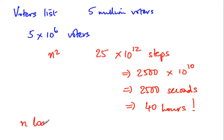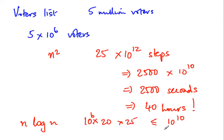On the other hand, n log n for 5 million voters: log of 10 to the 6 is about 20, so n log n is roughly 20 times 5 times 10 to the 6, well under 10 to the 10 — so it completes in one second or less. Sorting 5 million voters with an n squared algorithm takes 40 hours; with an n log n algorithm it takes one second. This enormous usability difference is not apparent for small inputs.